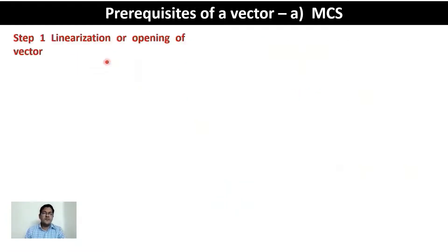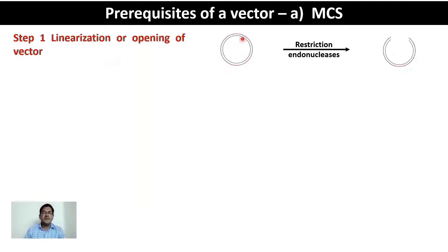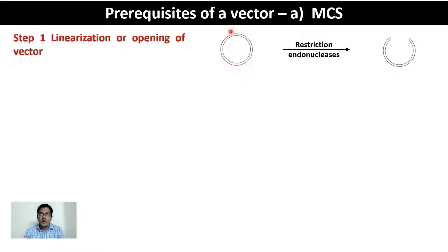Let's look at the important features and prerequisites required of a vector. Going back to the first step of a typical DNA cloning experiment — opening the vector. Most vectors are circular and must be opened using restriction endonucleases. The vector's own restriction sites may not be enough to accommodate all types of inserts, so the vector must have additional restriction sites. All of these restriction sites are located within one specific stretch of DNA in the vector.